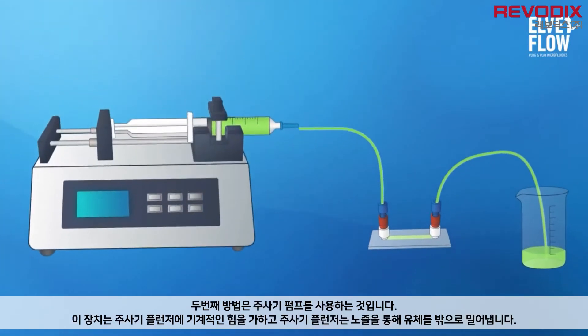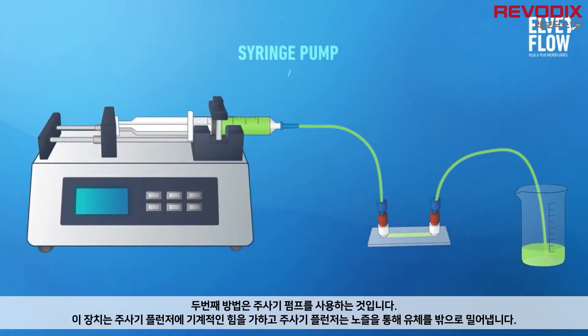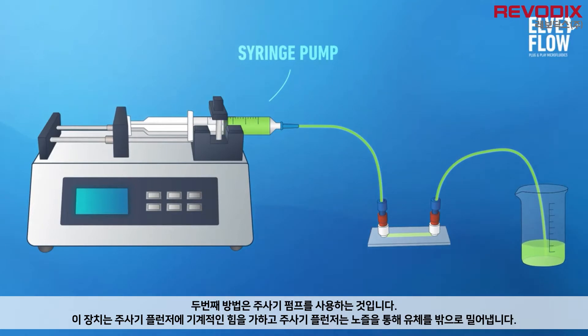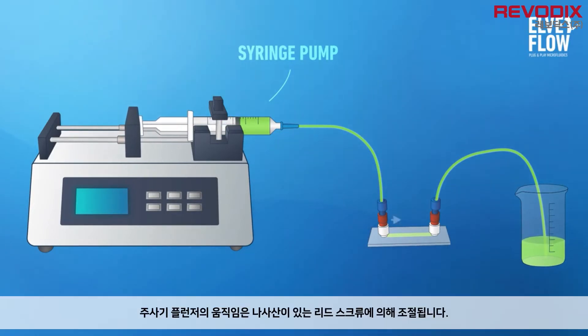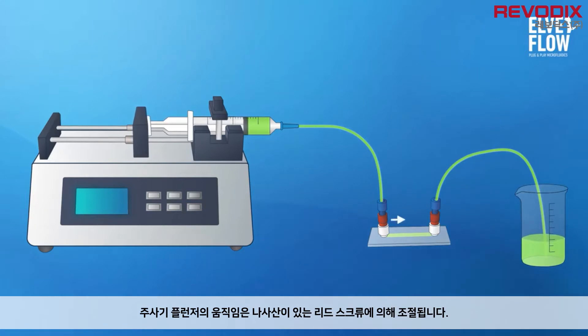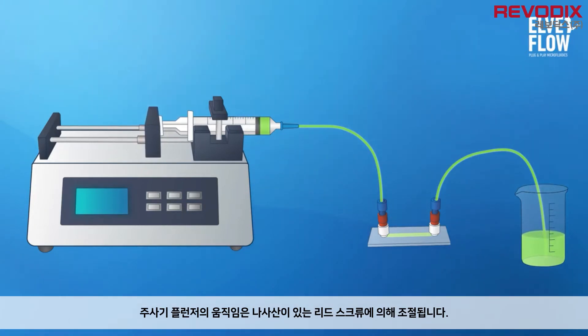The second method uses a syringe pump. This instrument applies a mechanical action onto a plunger which pushes the liquid through the syringe nozzle. The mechanical motion of the plunger is controlled by an endless screw.